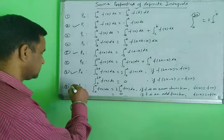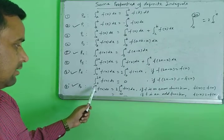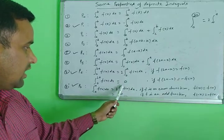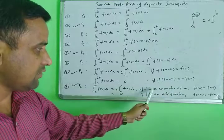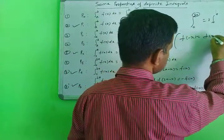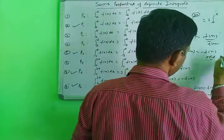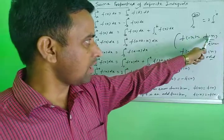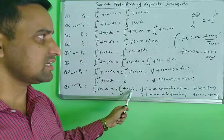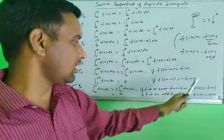Property P7 is very important. For limits minus a to plus a — symmetric limits like minus 2 to plus 2, minus 3 to plus 3 — if f is an even function, the result is 2 times the integral from 0 to a of f(x) dx. To check if a function is even: f(minus x) equals f(x).